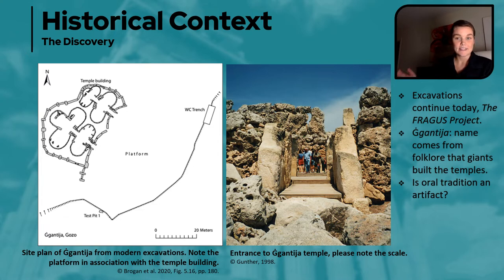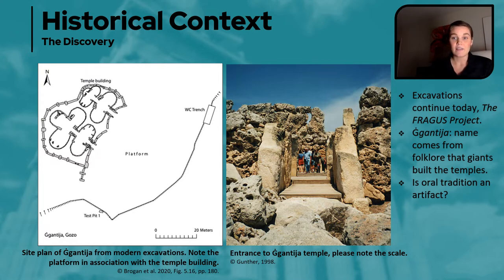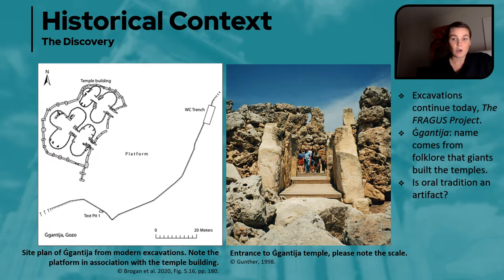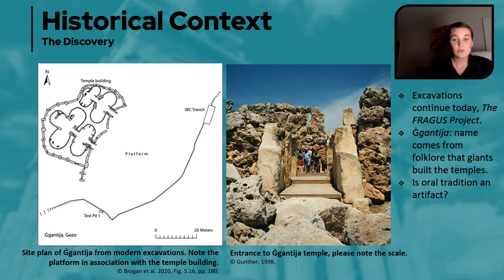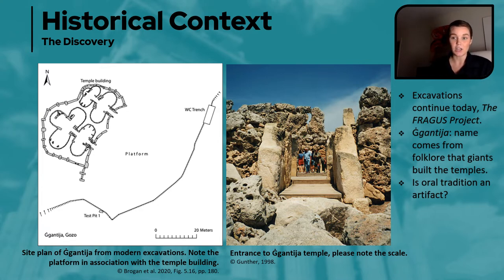In terms of its name — because I really do like etymology — Ġgantija's name comes from the folklore surrounding the temple: that the large stones were carried by giants who built it. This is a fairly consistent narrative across the archipelago when it comes to the other temples on the main island as well. This made me think of something I want you as students in this archaeology-related course to consider: is folklore, is oral tradition an artifact? If it fits all the criteria other than being a physical object, and in this instance it was integral to coming to know and understand the site on a more scientific level — there's not really any right or wrong answer, but it's something to think about going forward.